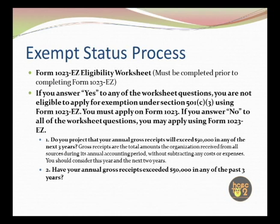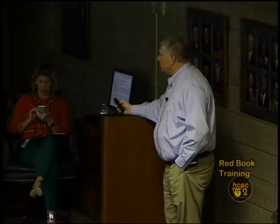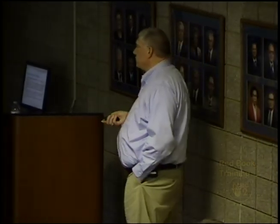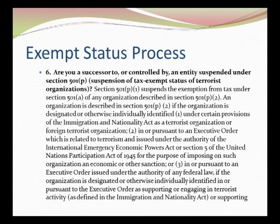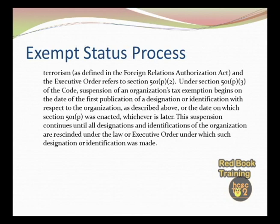There's an eligibility worksheet you go through to determine whether you qualify for the 1023-EZ. If you answer yes to any of those questions on the worksheet, you cannot apply under the EZ form — you'd need to file the complete Form 1023. If you answer no to those questions, you may use the EZ form. You can get any of these forms at IRS.gov under Forms and Publications. There are about six questions that lead you through the process.